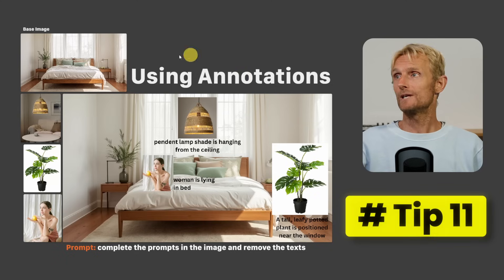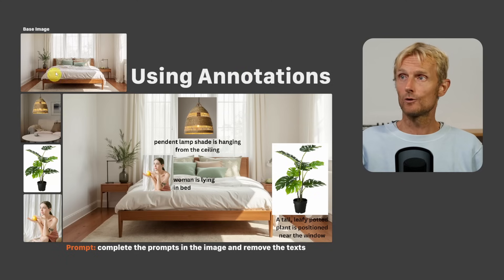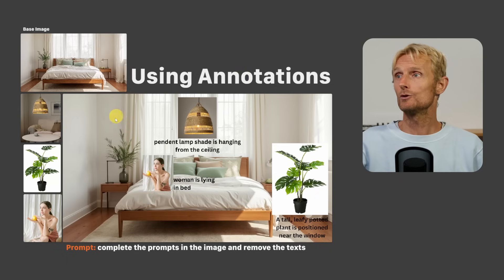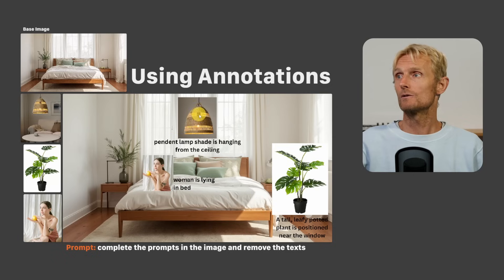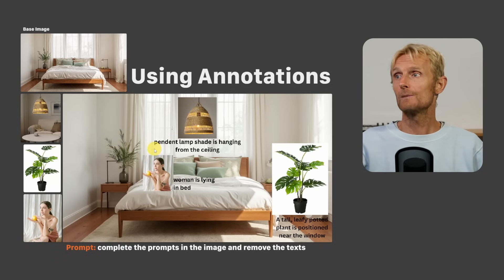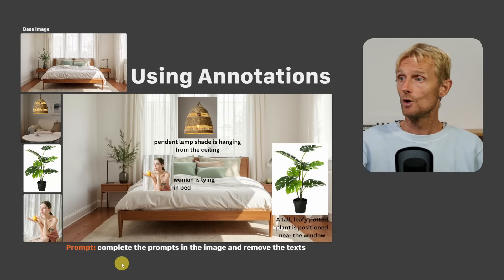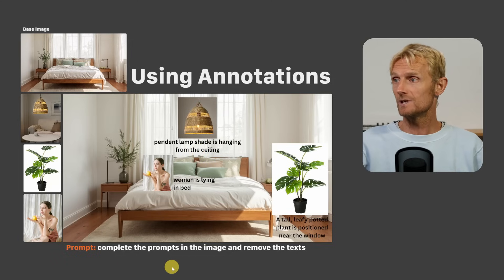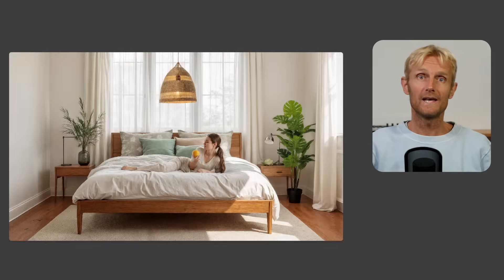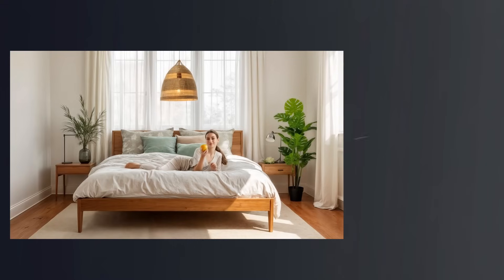Tip number 11: Using annotations. Instead of dragging four separate images into Nano Banana, it's better to use the base image and place the objects on it with descriptions of where you want them. I placed all the objects in the image and put descriptions of where I want them, then used the prompt 'complete the prompts in the image and remove the text' — and got a great result.